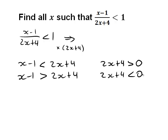So we now have two sets of inequalities. The first: x minus 1 is less than 2x plus 4, AND 2x plus 4 is greater than 0. OR the second: x minus 1 is greater than 2x plus 4, AND 2x plus 4 is less than 0.